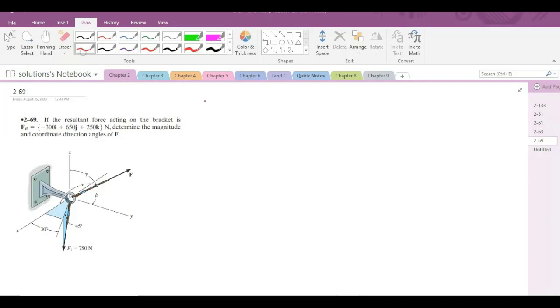So for force F, we have been given these coordinate direction angles. These are alpha, beta, and gamma. So with the help of these coordinate direction angles, the force F in terms of Cartesian vector form could be written as F cos alpha i plus F cos beta j plus F cos gamma k.